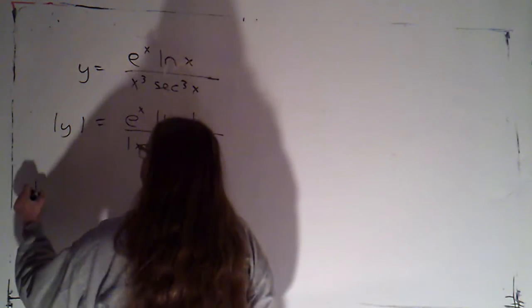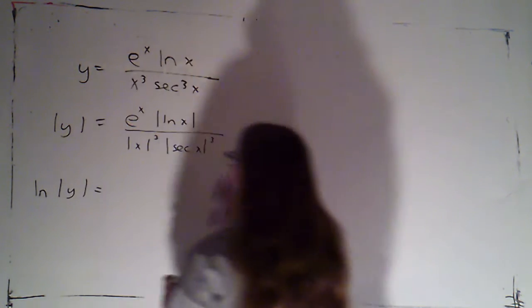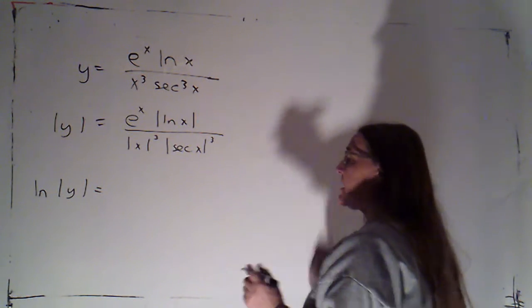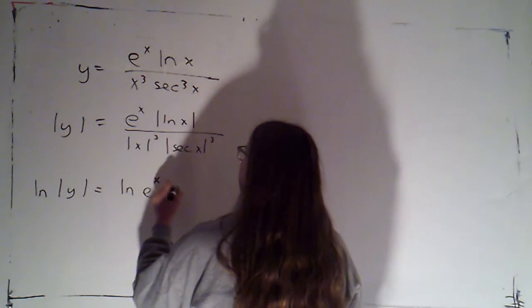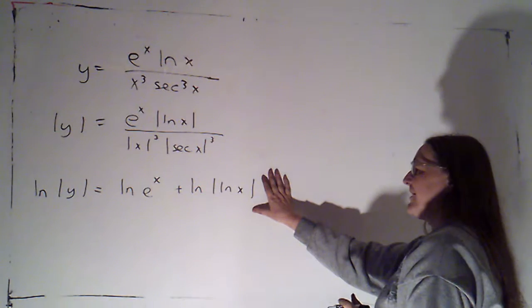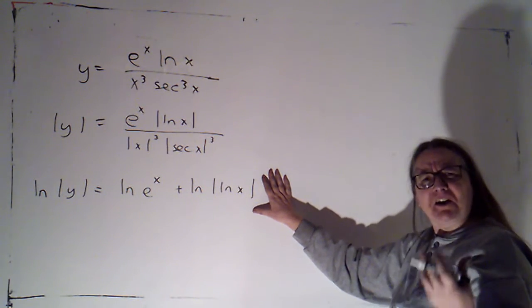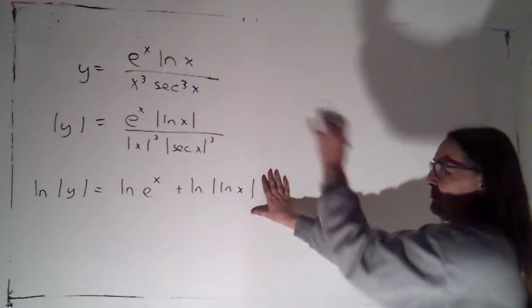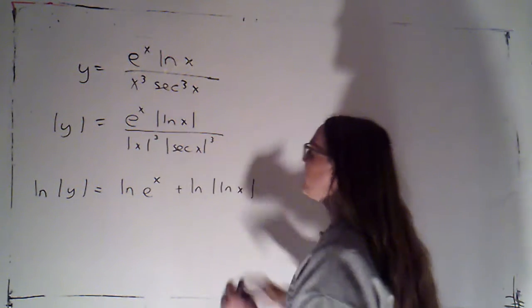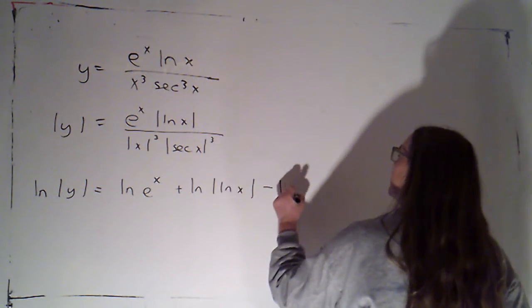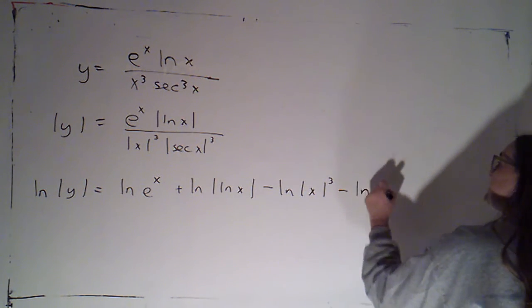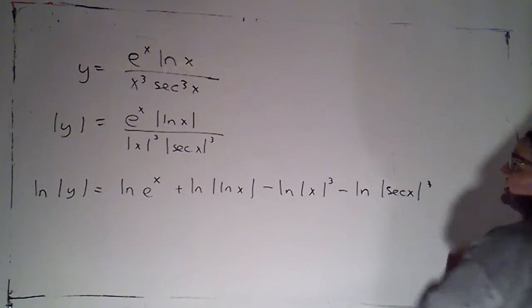Okay. Now I'm going to take the natural log of the absolute value of y and that's going to equal the natural log of this whole thing. But I know that using my sum and difference rules—I'm sorry, I'm using my product and quotient rules, not my sum and difference rules. I'm breaking these products and quotients into sums and differences of logs. These two factors were on the bottom, so I'm going to subtract the logs for those pieces. So minus natural log of absolute value of x cubed minus the natural log of the absolute value of secant of x cubed.